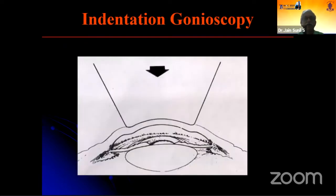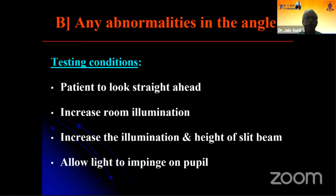Once you have diagnosed a closed angle or an occludable angle, you have to perform indentation gonioscopy, because this will help you determine whether it is appositional closure or synechial angle closure. This is possible only with a four-mirror gonioscopy lens.